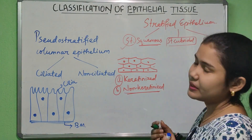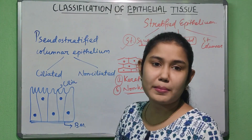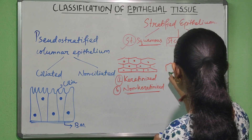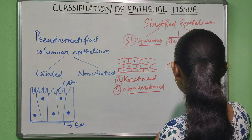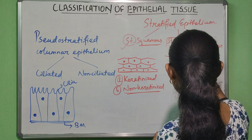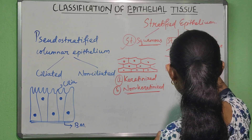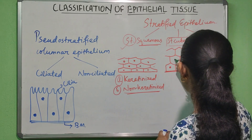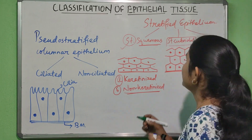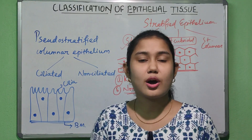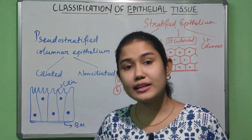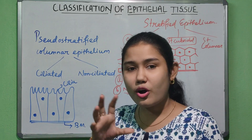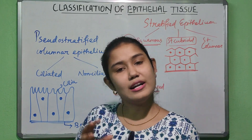Stratified cuboidal epithelium has an upper layer of cuboidal cells — all cells have the same height and width. It is found in the ducts of sweat glands in adults and also in the pancreatic duct. Its main functions are protection, limited secretion (as in sweat glands), and absorption.